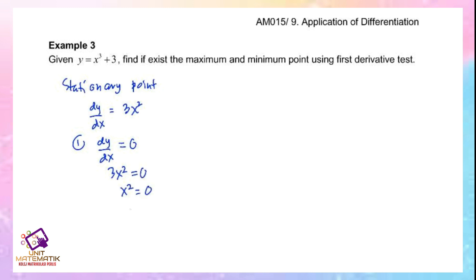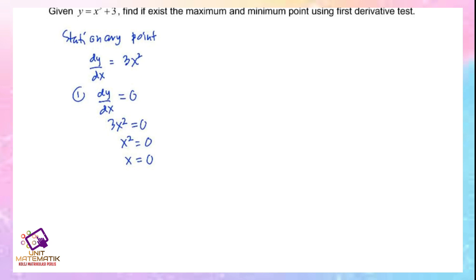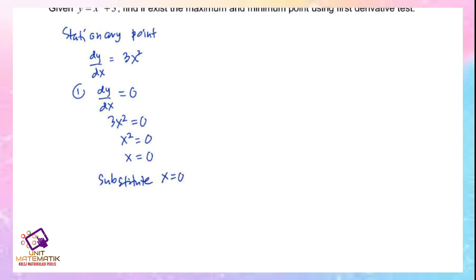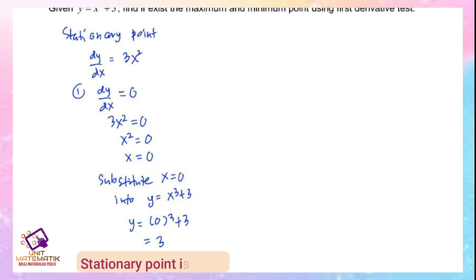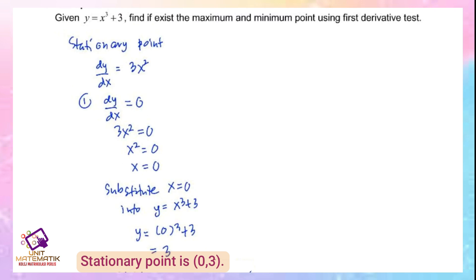With x equals 0, substitute into the curve y equals x cubed plus 3: y equals 0 cubed plus 3, so y equals 3. The stationary point is (0, 3). Now test the nature of this point using the first derivative test by forming a table.